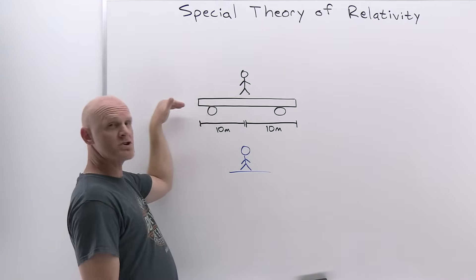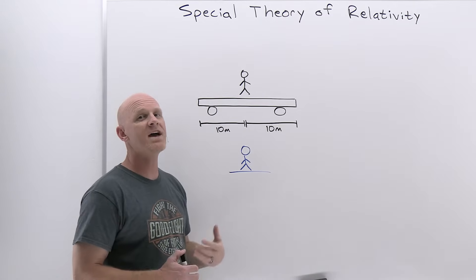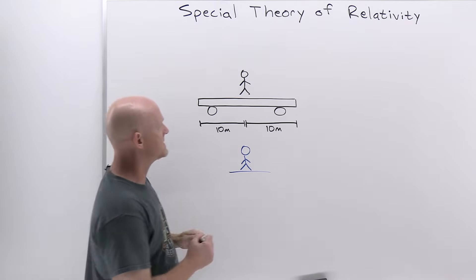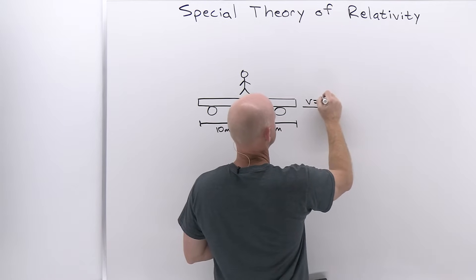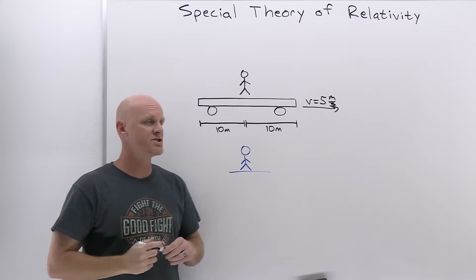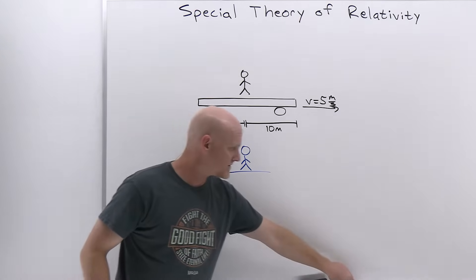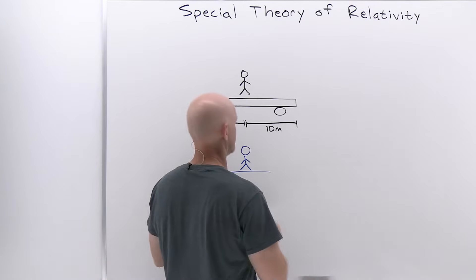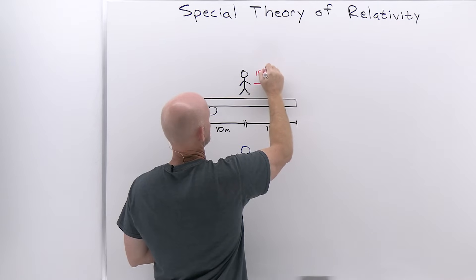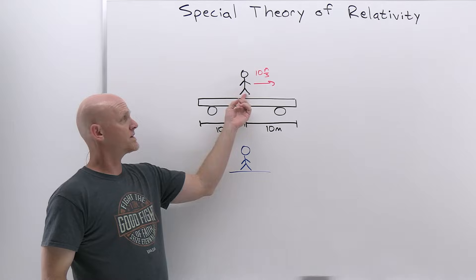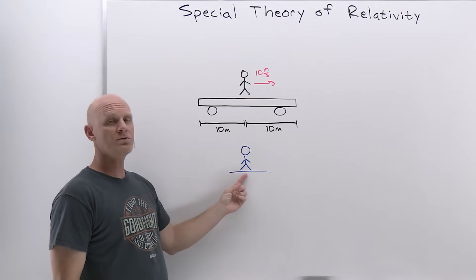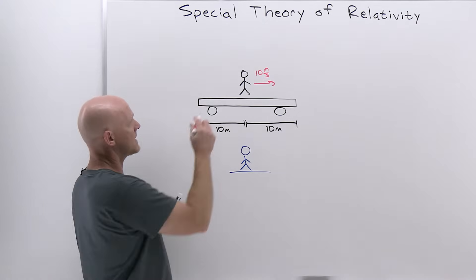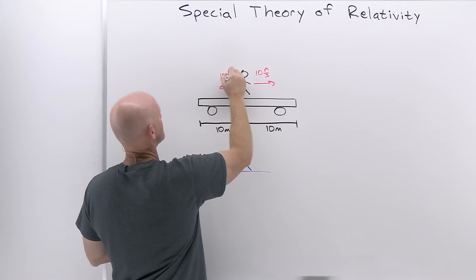We're going to have an open train car, and I'm going to be standing right in the middle with a Nerf gun. This train car is going to be traveling with a velocity of 5 meters per second in a particular direction. I'll fire the Nerf gun, which fires bullets at a velocity of 10 meters per second. If the train car is not moving, the bullet travels at 10 meters per second relative to me, and a person standing on the ground would also see it moving at 10 meters per second.